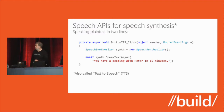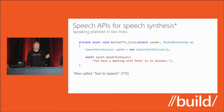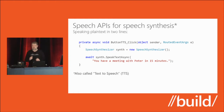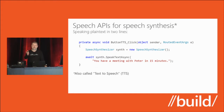Speaking text to the user is very easy — just two lines of code. You instantiate a SpeechSynthesizer object and call SpeakTextAsync with your text. It'll say something like 'you have a meeting with Peter in 15 minutes.' Speech synthesis has improved dramatically — it used to sound really tinny, but we're getting much better at natural-sounding voices. We have a team in Beijing that has really done a good job on natural-sounding voices.